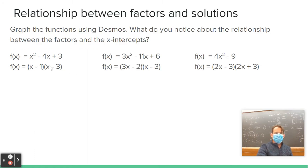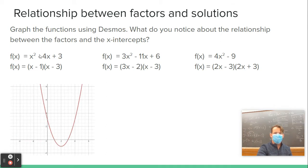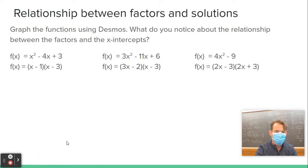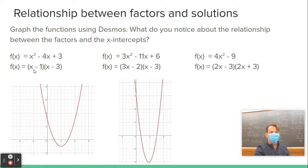Now when we factor these, let's graph them. My question is: what's the relationship between the factors and the x-intercepts? If I put in the equation x squared minus 4x plus 3 and graph it, I notice that plus 3 is my y-intercept. So the value of the function at 0 is always given by C. What do you notice about the numbers 1 and 3 here — what's the relationship between those factors and the x-intercepts?